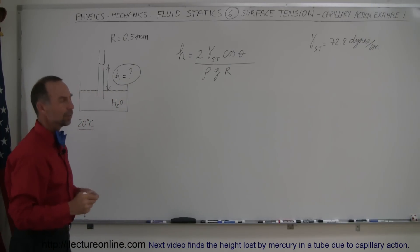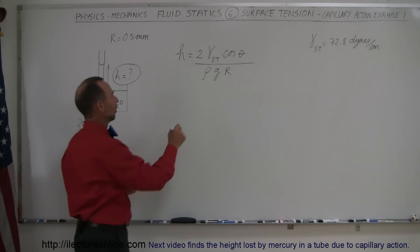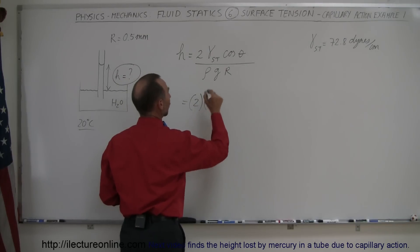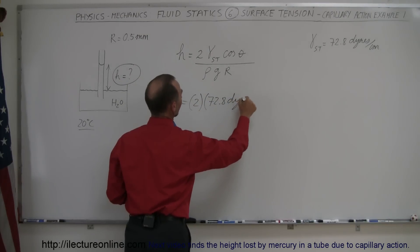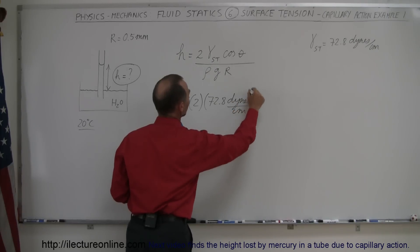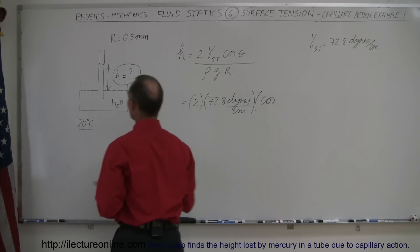So let's go ahead and plug everything in. We'll keep everything in CGS units. So this is equal to 2 times the coefficient of surface tension, which is 72.8 dynes per centimeter, times the cosine of the contact angle.